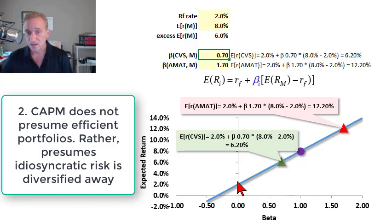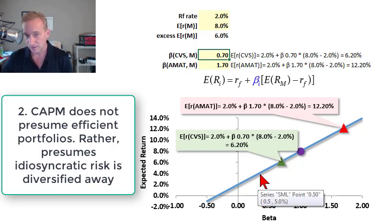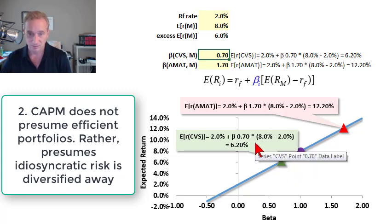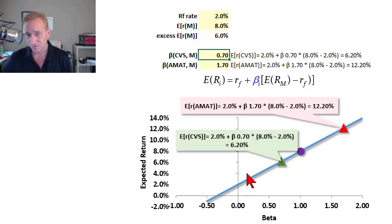Secondly, as opposed to the capital market line that I looked at in the two previous videos where in that capital market line, there were only efficient portfolios on the line, with the security market line and Capital Asset Pricing Model, that's not the case. We can have any of these, many of these points will not be the most efficient. They will not be efficient. The security market line does not purport to contain efficient portfolios. It's only telling us the expected return is a function of the beta.